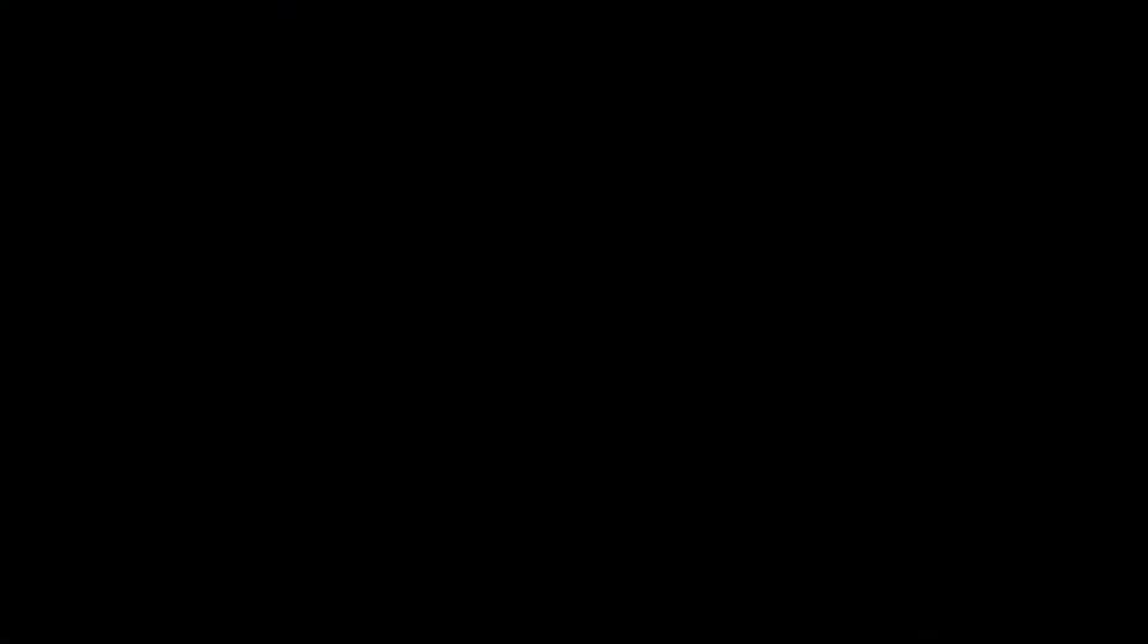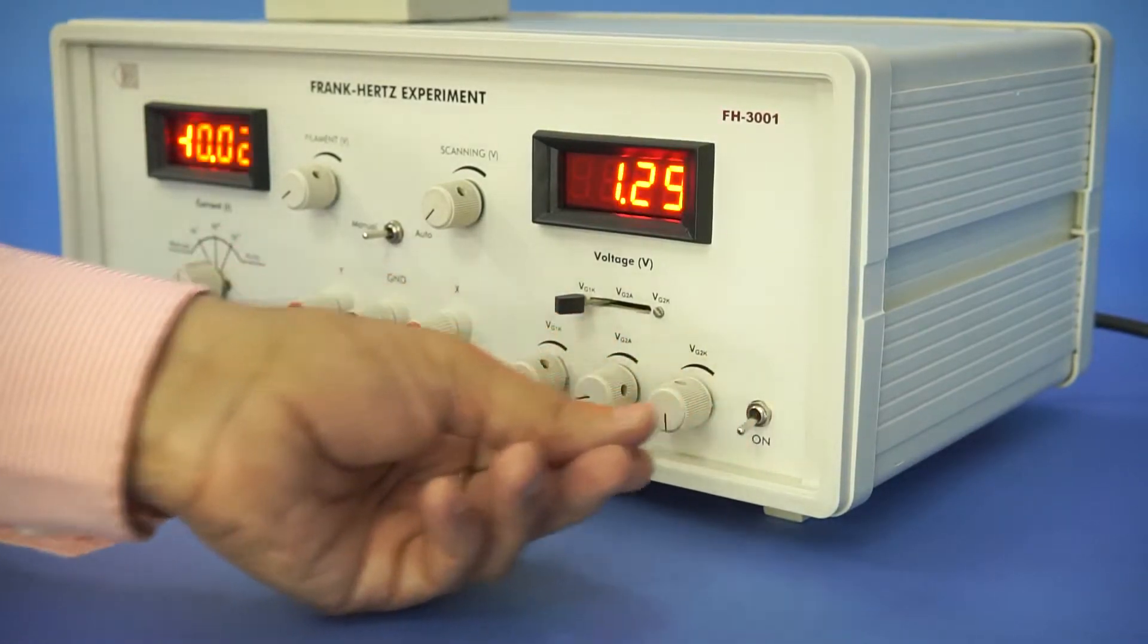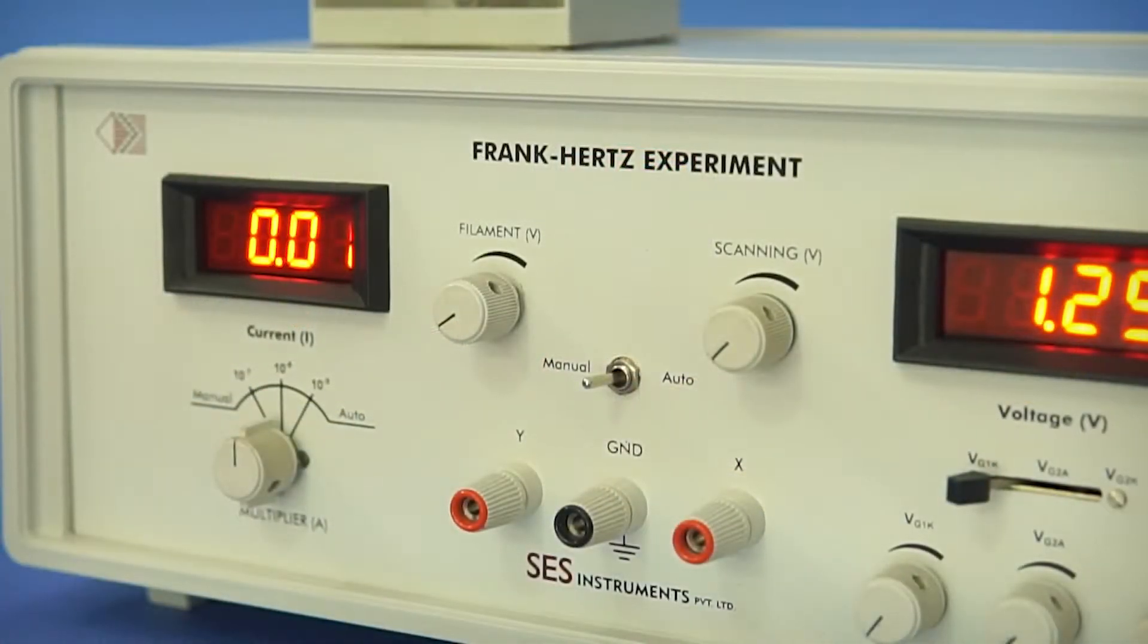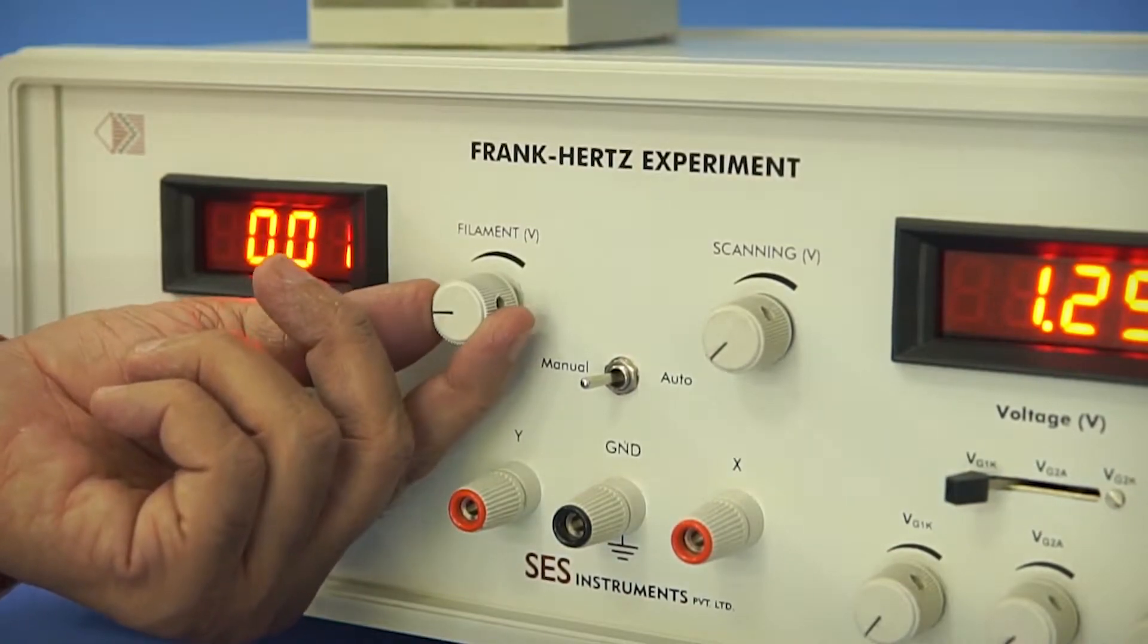Next we will place the tube cover in its position and slide the same to lock. Now the instrument is fully assembled. Now switch on the setup. Now we need to set the filament voltage. Set this knob at around middle.